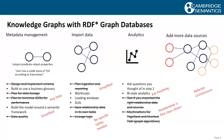We store subject-predicate-object — a very simple data model. For example, we can store the fact that John has a credit score of 710: John is the subject, having a credit score is the predicate, and 710 is the object. With the addition of properties, we can also add things like provenance — for instance, 'according to TransUnion' or 'John has a credit score of 710 on X date.'